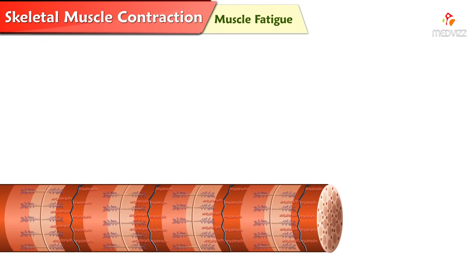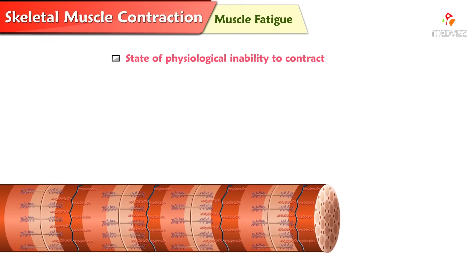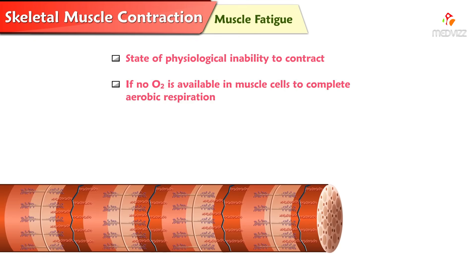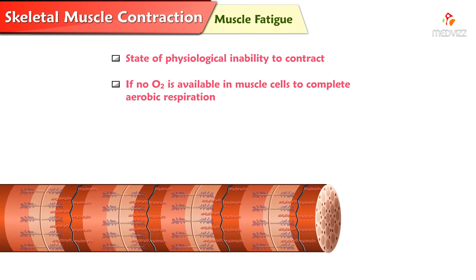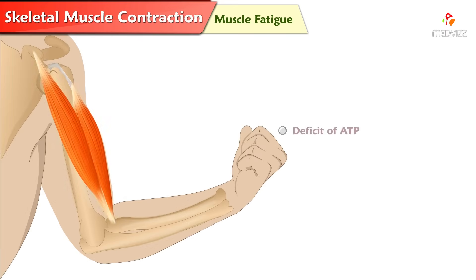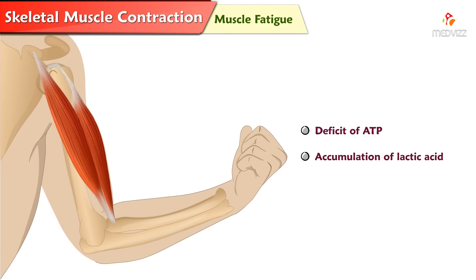Muscle fatigue is a state of physiological inability to contract. If no oxygen is available in muscle cells to complete aerobic respiration, pyruvic acid is converted to lactic acid, which causes muscle fatigue and soreness. Muscle fatigue results from a relative deficit of ATP and accumulation of lactic acid.